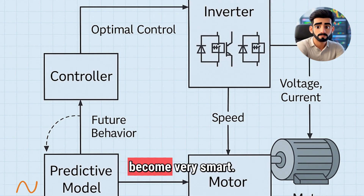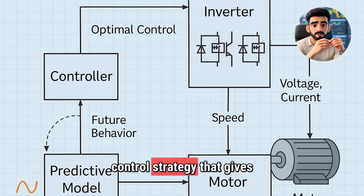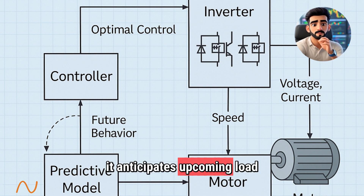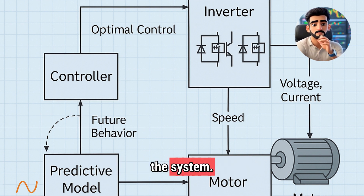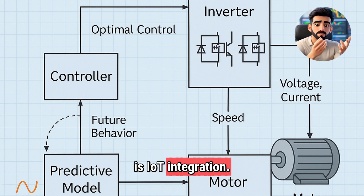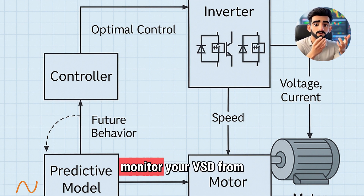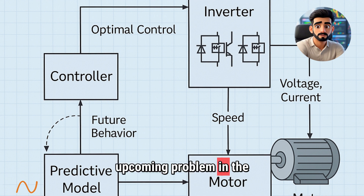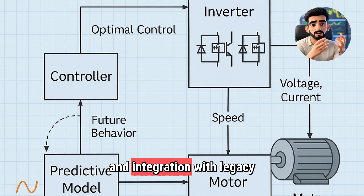Control strategies have also become very smart. There is a technique called Model Predictive Control, or MPC — an advanced control strategy that gives VSD the power to predict the future. By using the mathematical model of the system, it anticipates upcoming load changes and proactively adjusts the motor speed, improving both performance and efficiency. The biggest trend is IoT integration. Today's VSDs are connected with the Internet of Things, meaning you can monitor your VSD from anywhere in the world, see its real-time performance, and track its health. If there is an upcoming problem, you get an early alert through predictive maintenance. Challenges with this integration include data security, compatibility of different devices, and integration with legacy systems.